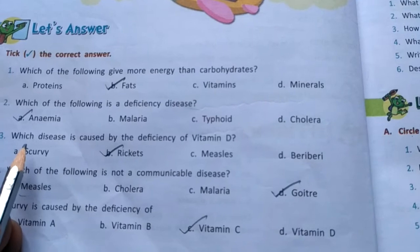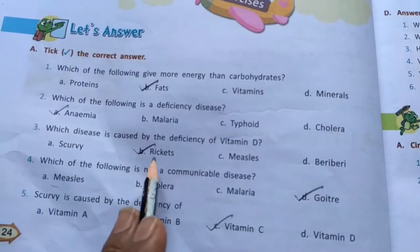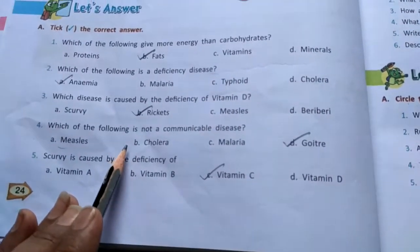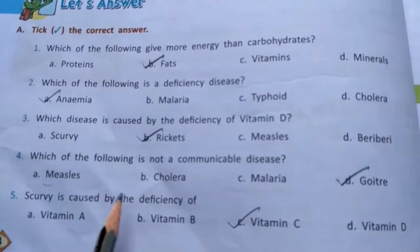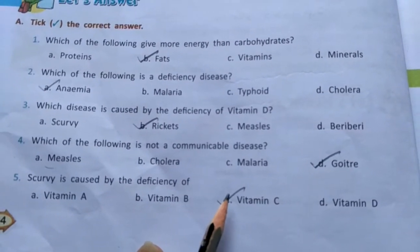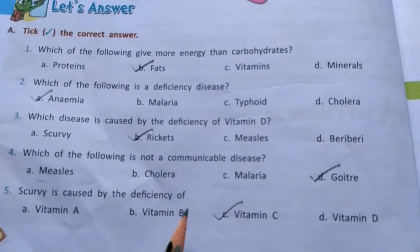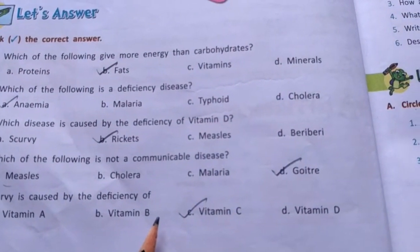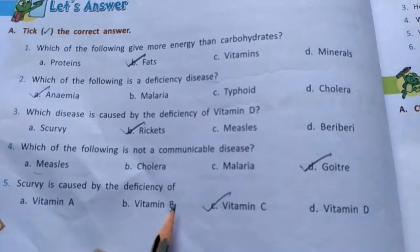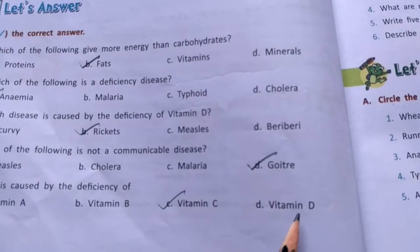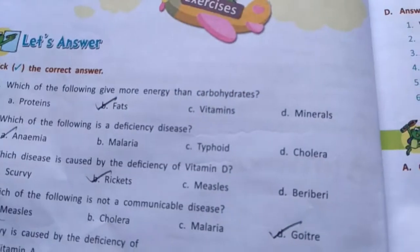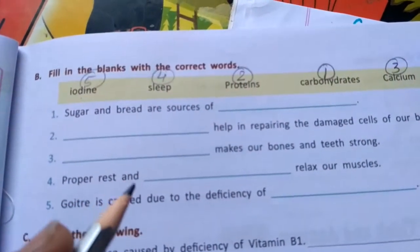Fourth — which of the following is not a communicable disease? Measles, cholera, malaria, or goiter — the answer is goiter, as it is a deficiency disease caused by deficiency of iodine. Fifth — scurvy is caused by deficiency of which vitamin? Vitamin A, B, C, or D — the answer is vitamin C. Deficiency of vitamin A causes night blindness, vitamin B causes beriberi, vitamin D causes rickets, and vitamin C causes scurvy with swelling and bleeding of gums.